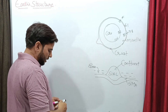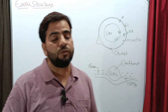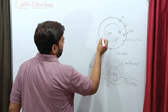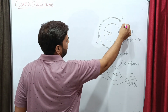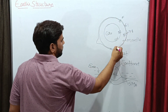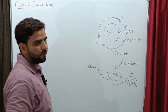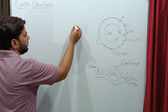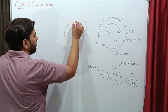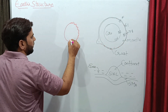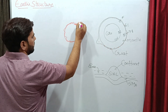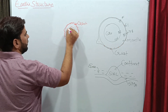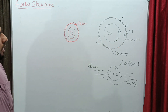The first question is: what is the crust? The crust is the outermost layer of the Earth's surface. If you consider the Earth as a sphere, the outermost surface is called the crust. Below the crust lies the mantle, and below that lies the core.